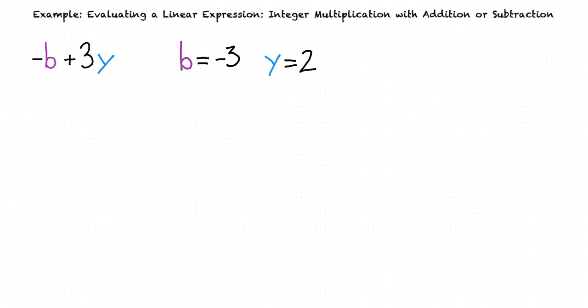Suppose we're asked to evaluate the expression negative b plus 3y when b equals negative 3 and y equals 2. Our first step in simplifying this expression is to substitute the known values for the variables into our expression.